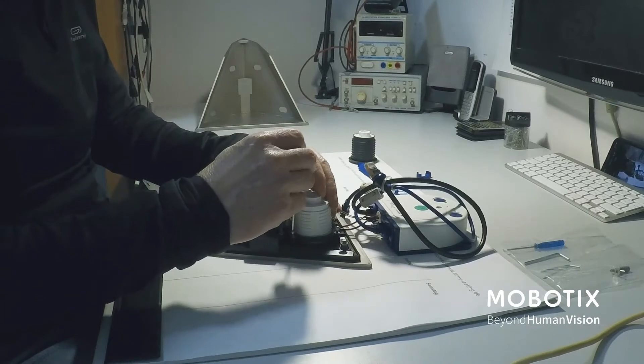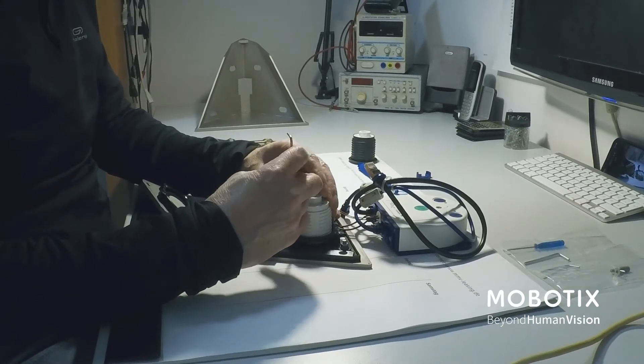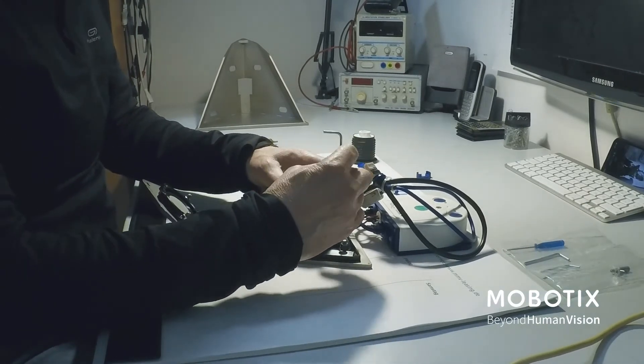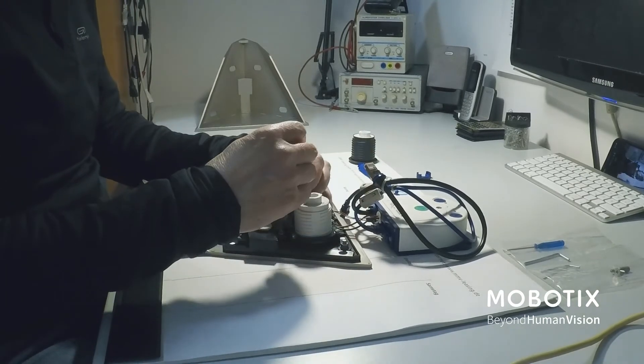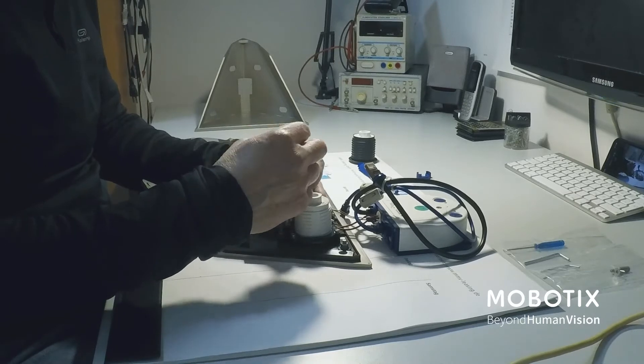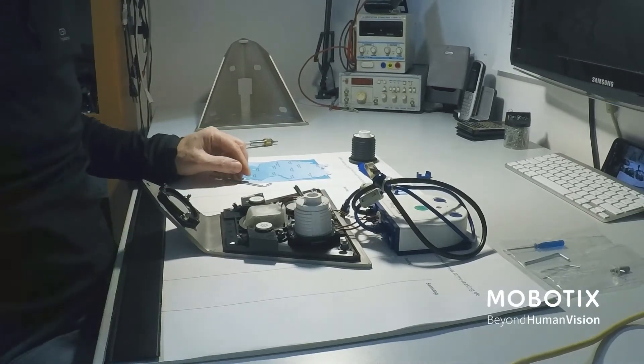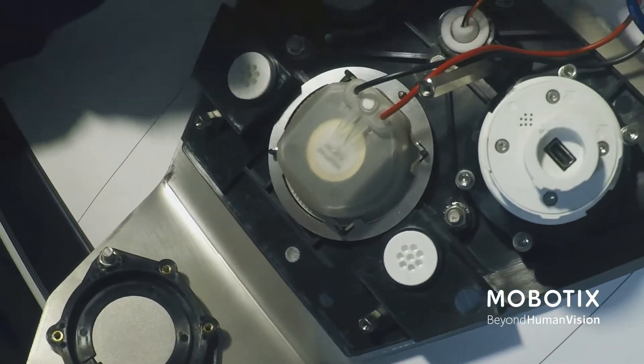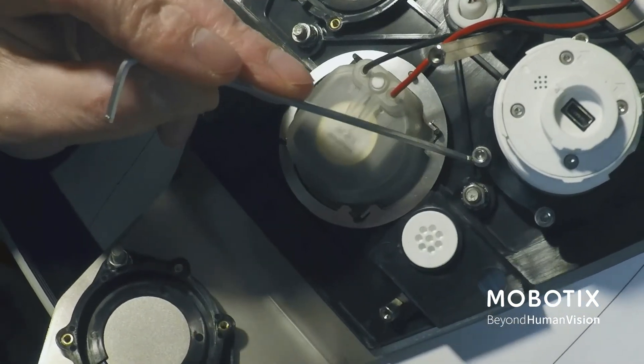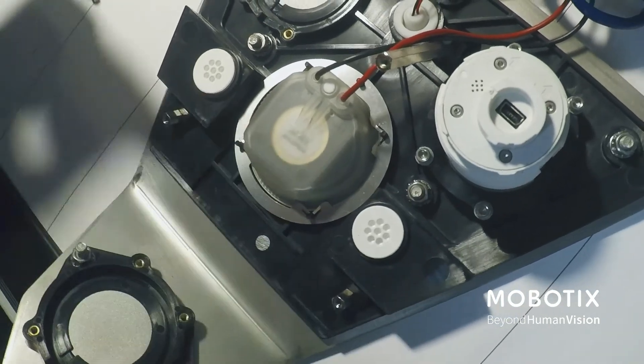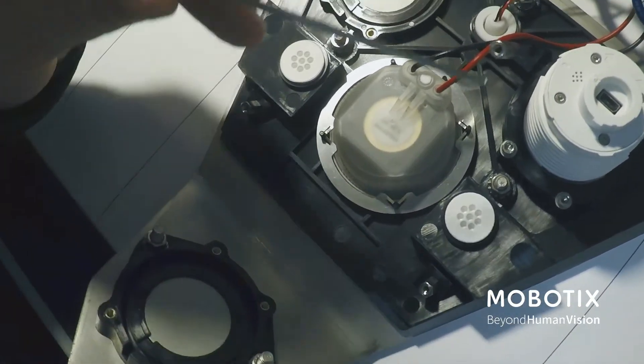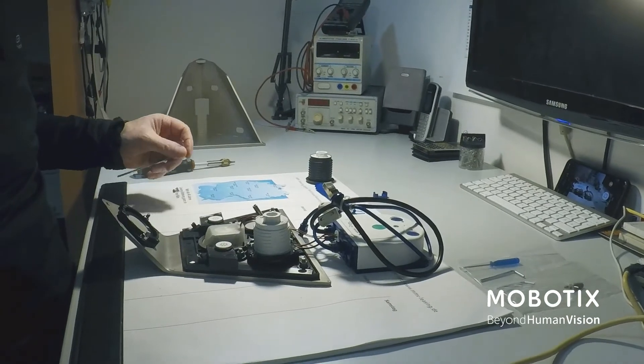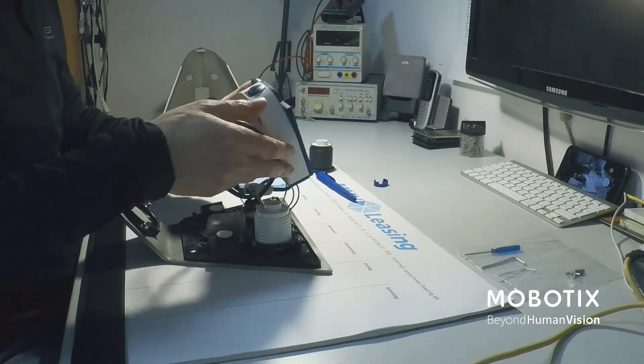And fix the screws again. Okay, let's make a closer look. So these four screws have to be opened and these screws are the holders for the body. Okay, so let's put the body back onto the camera.